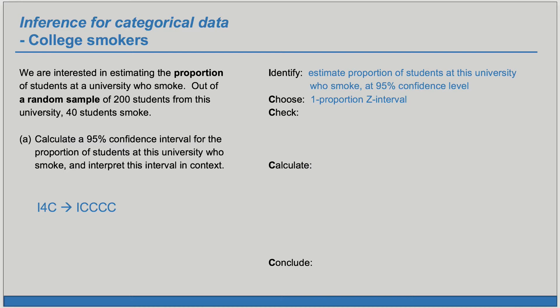With any inference procedure we need to check that the conditions are satisfied. Here we want to check that we have one random sample of less than 10% of the population for independence, and the success-failure condition: n*p-hat and n*(1 minus p-hat) are greater than or equal to 10. The problem states we have a random sample, and we'll assume there's greater than 2,000 total students at this university so we are sampling less than 10% of the population.